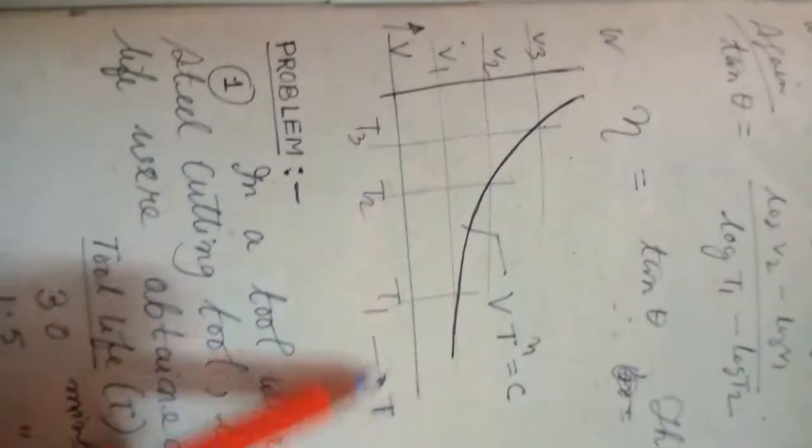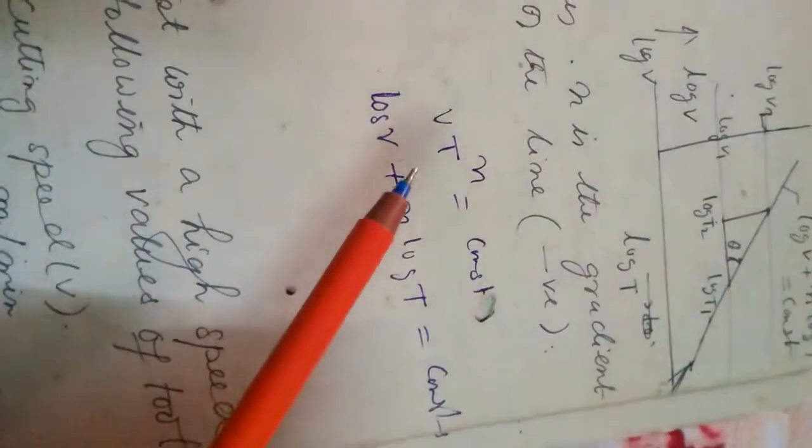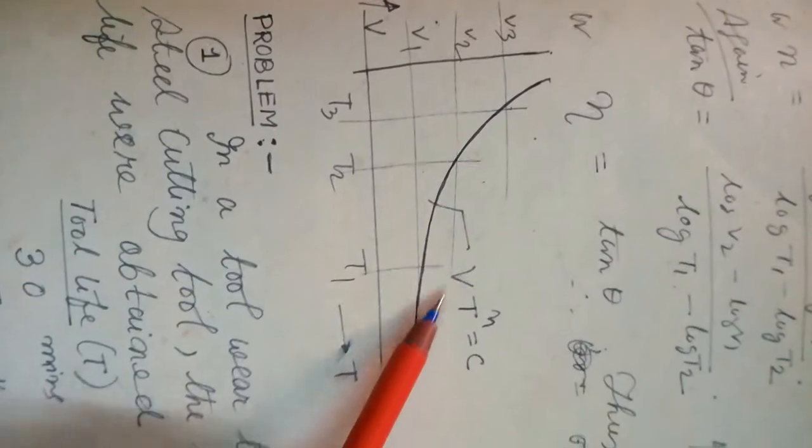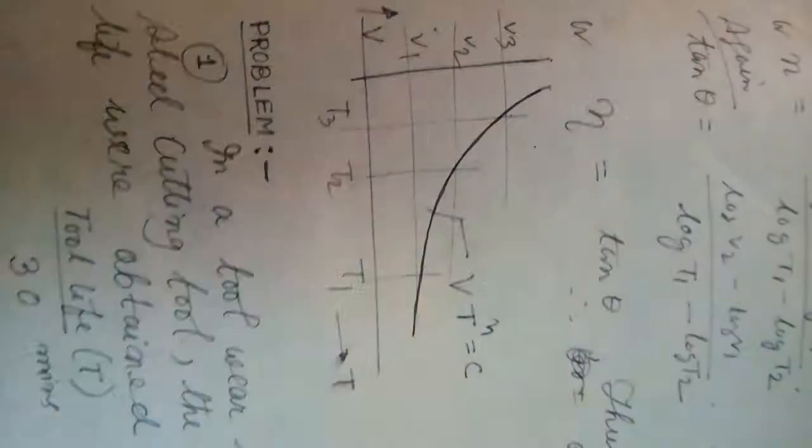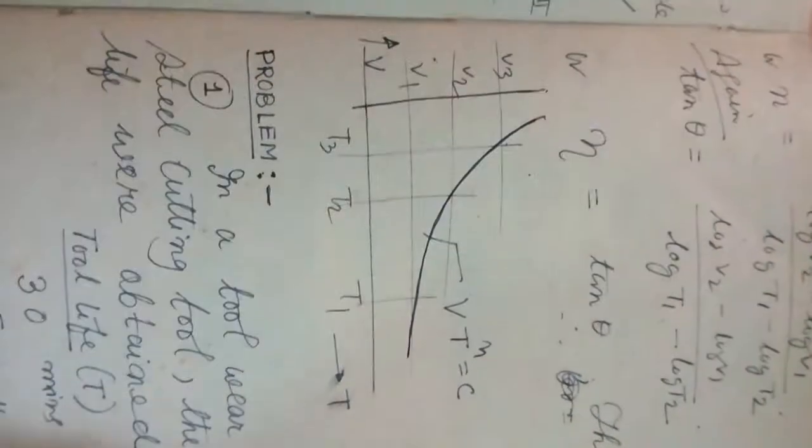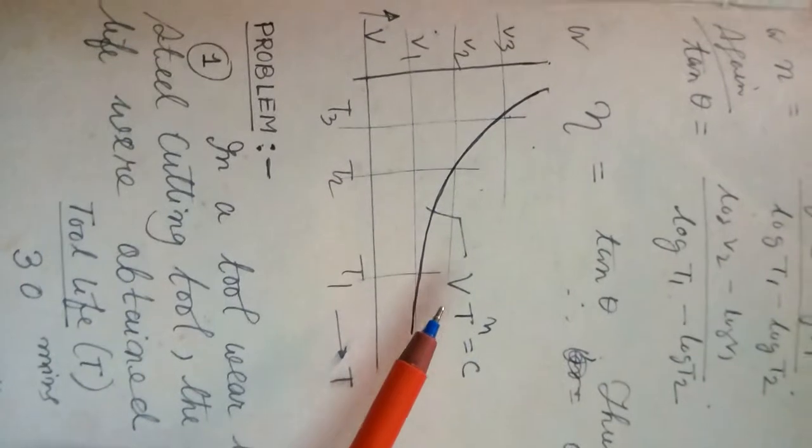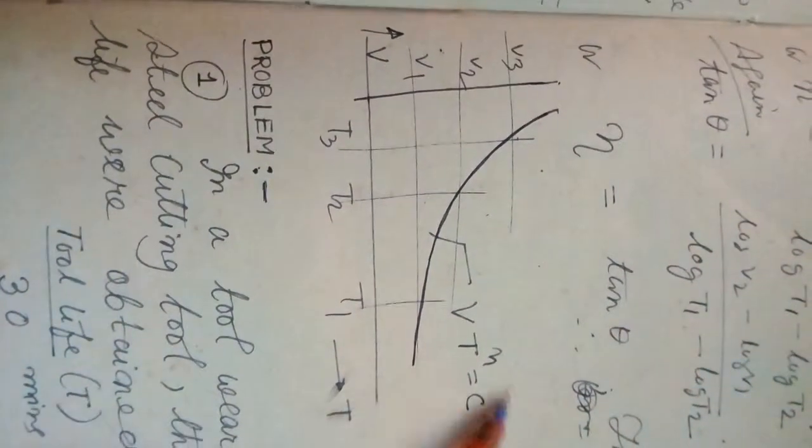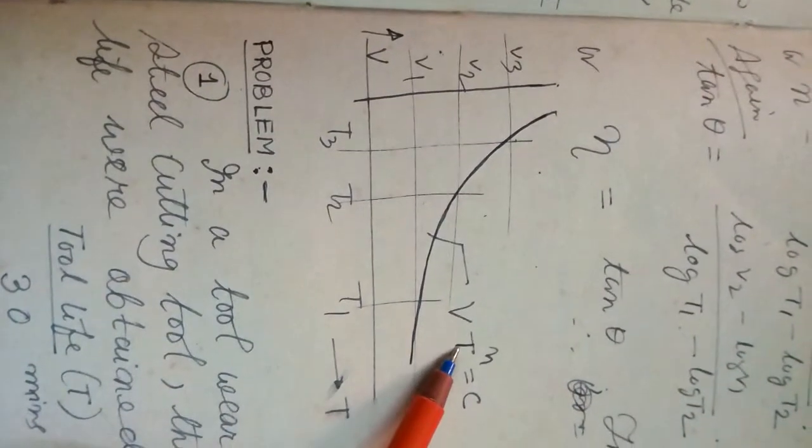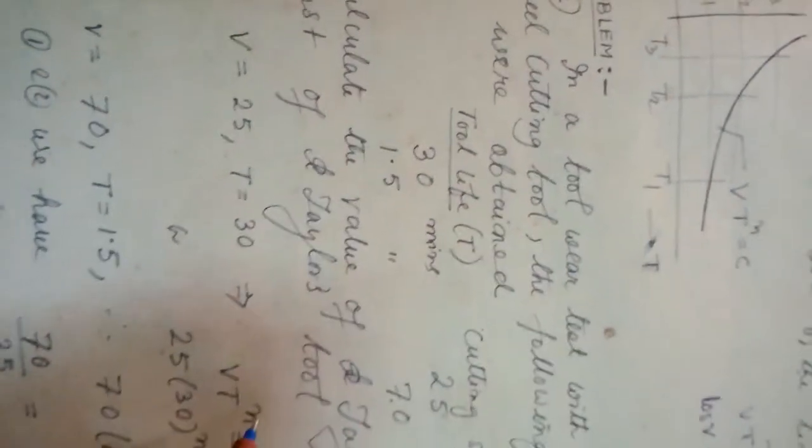If you do T versus V, then VT to the power n equals constant. This is the graph of VT to the power n equals constant. This type of graph is there in your adiabatic process, polytrophic process. But these values are quite defined: V is the velocity, T is the tool life, n is the index equals C. Let us do some problem.